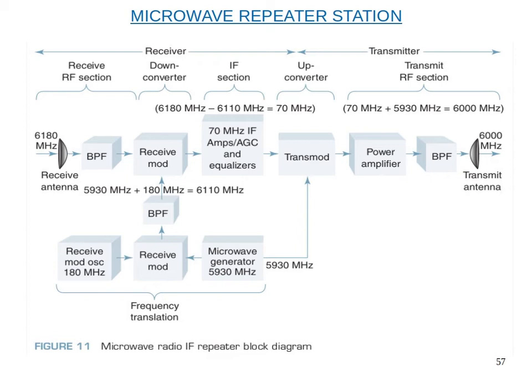The second microwave carrier frequency is fed into the receive modulator. In this figure, we use a single microwave generator for both down conversion and up conversion, so we do not need two separate microwave generators.